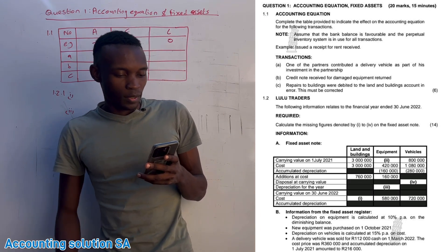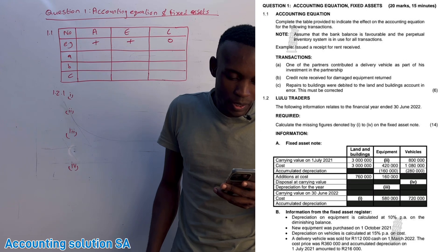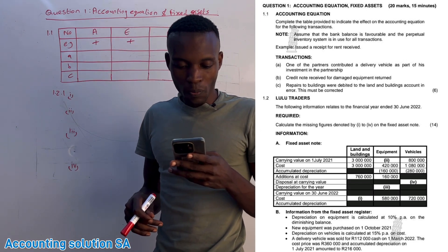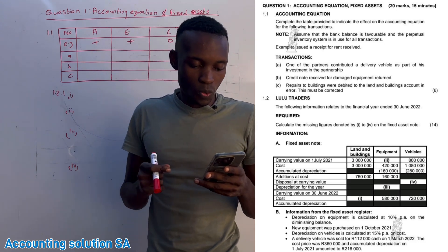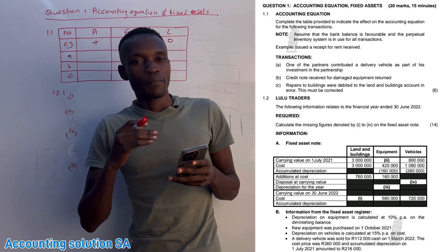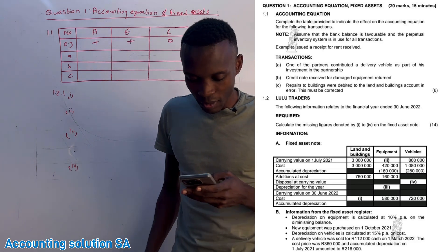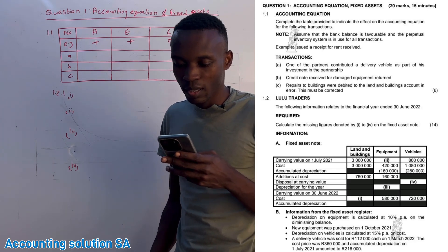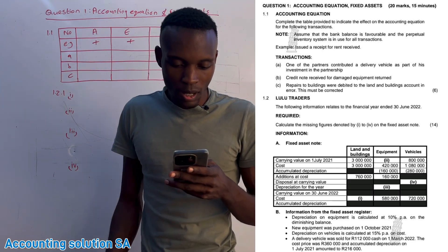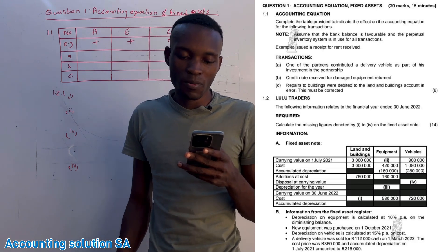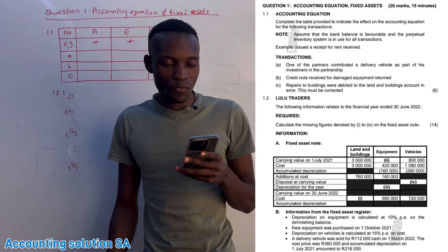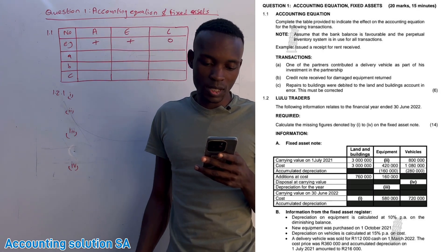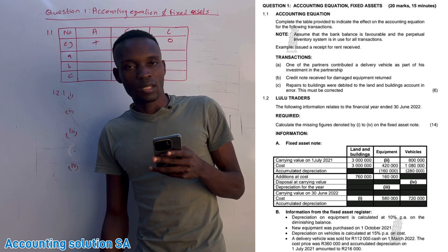For Question 1.1 we are going to answer the accounting equation, and for 1.2 we are going to do fixed assets. Remember this is Paper 1. They say complete the table provided to indicate the effect on the accounting equation for the following transactions. Assume that the bank balance is favorable and a perpetual inventory system is used for all transactions.